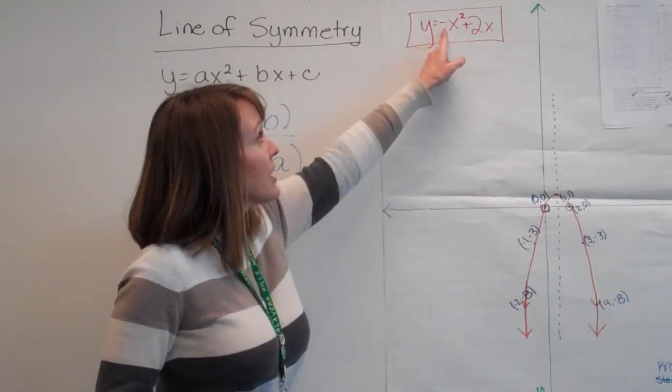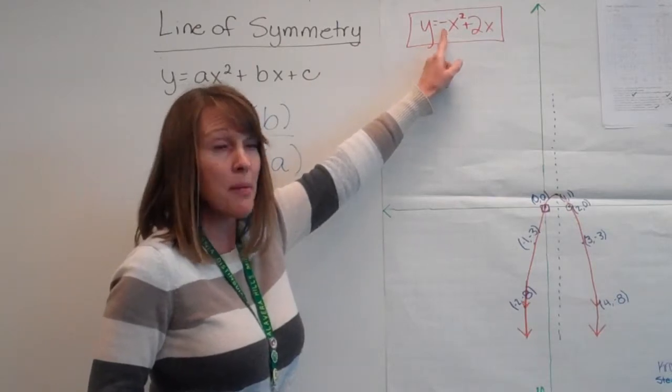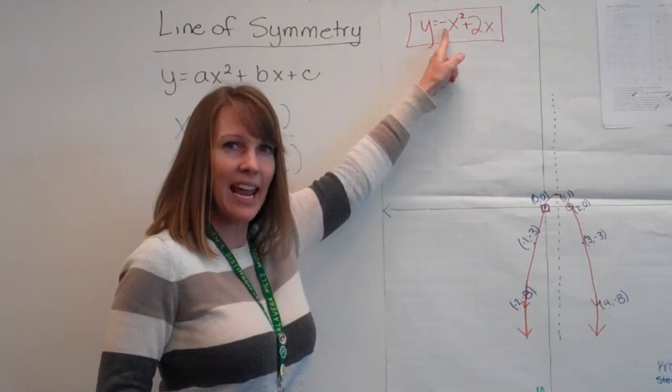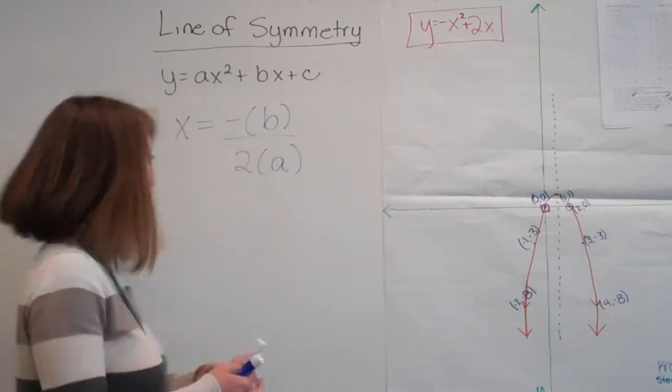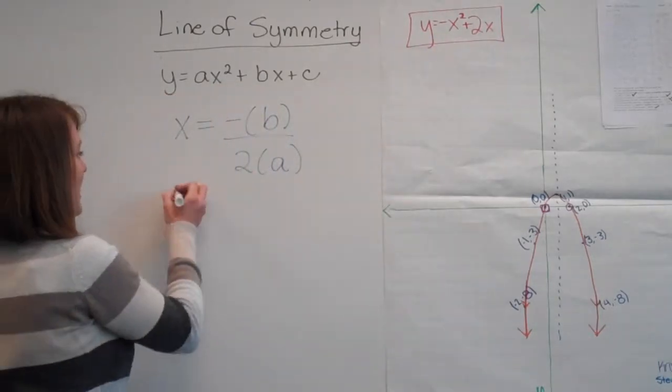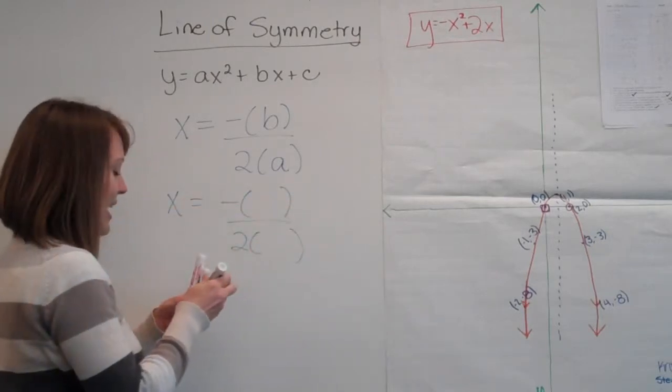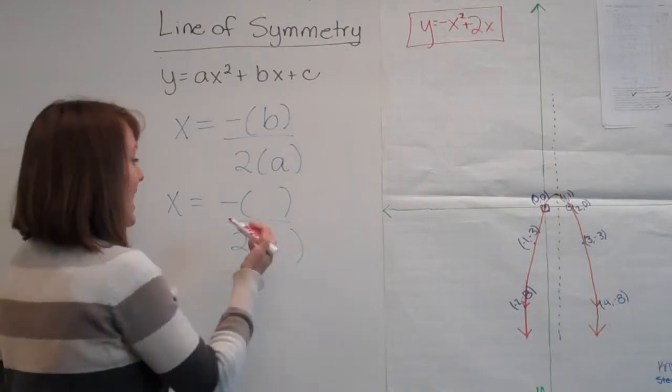Alright, so in front of my x squared, that's my number, which is my a, and let's see, there's really nothing there but a negative sign, but that would be a negative 1, okay? So we're going to write x equals negative b over 2 times a, and we just said our a was negative 1.